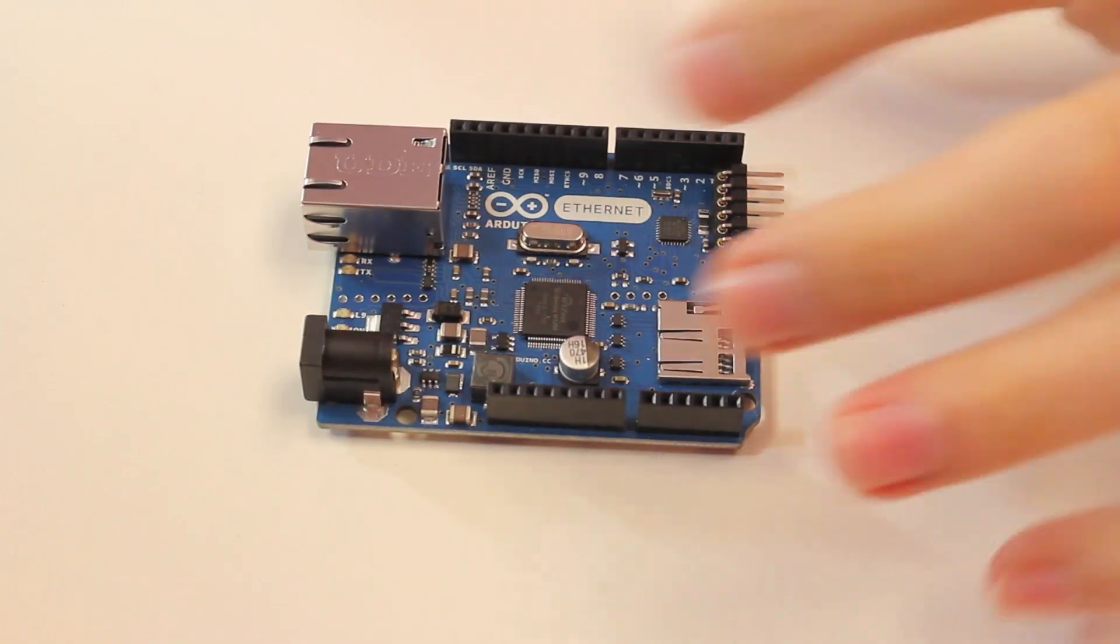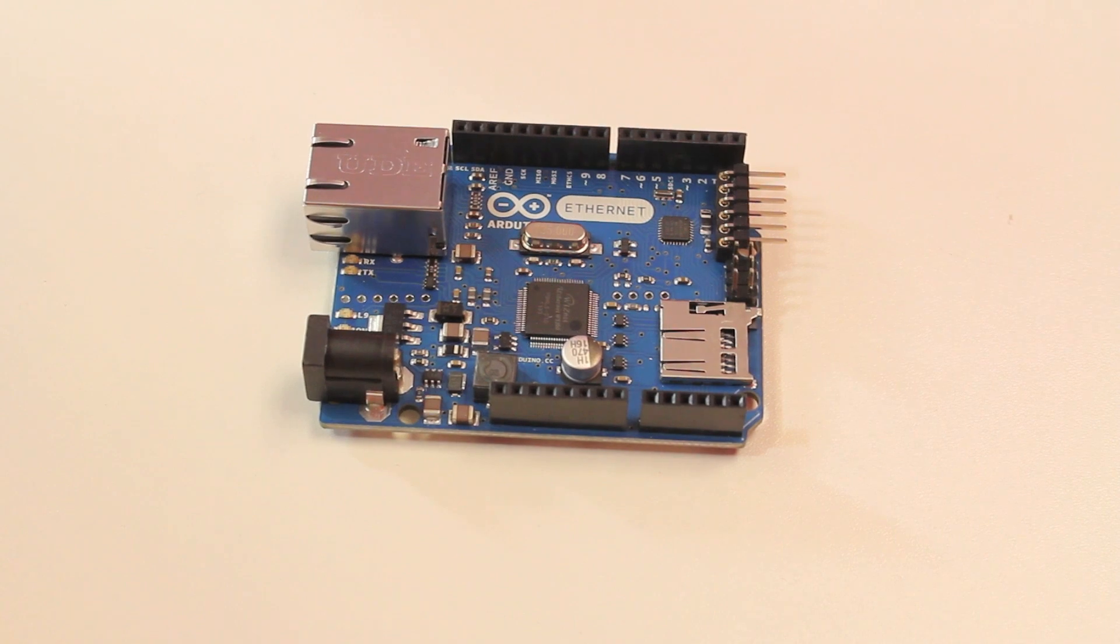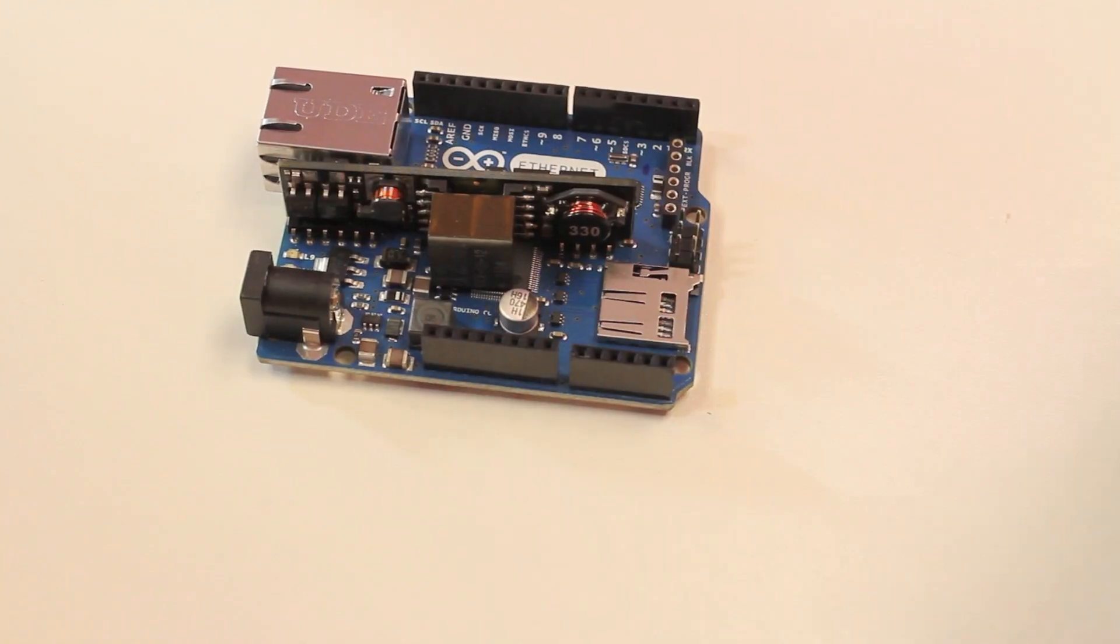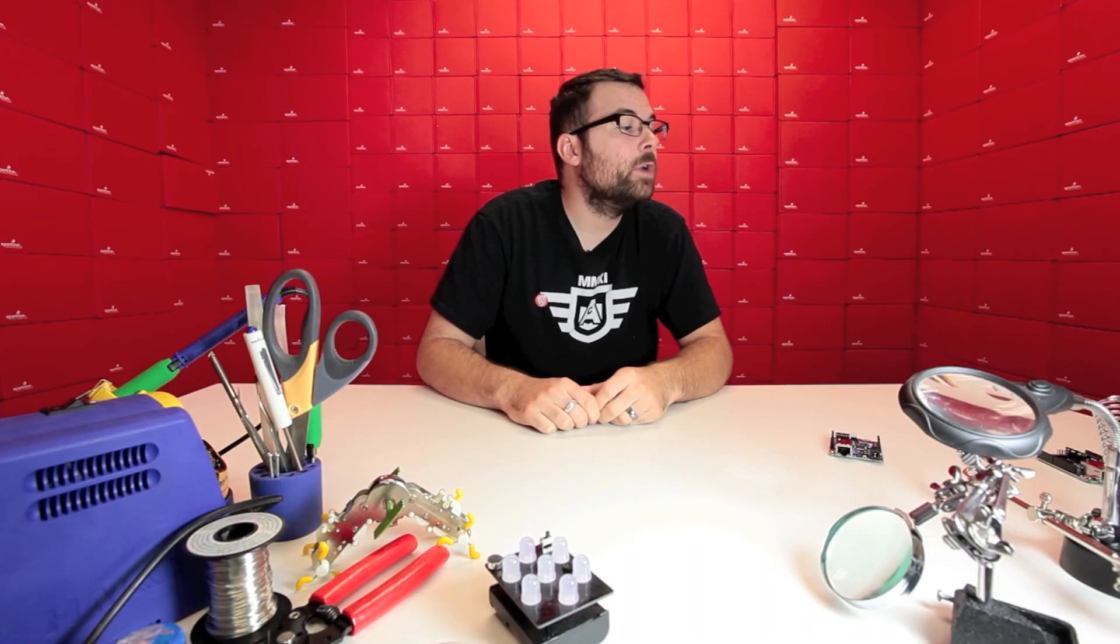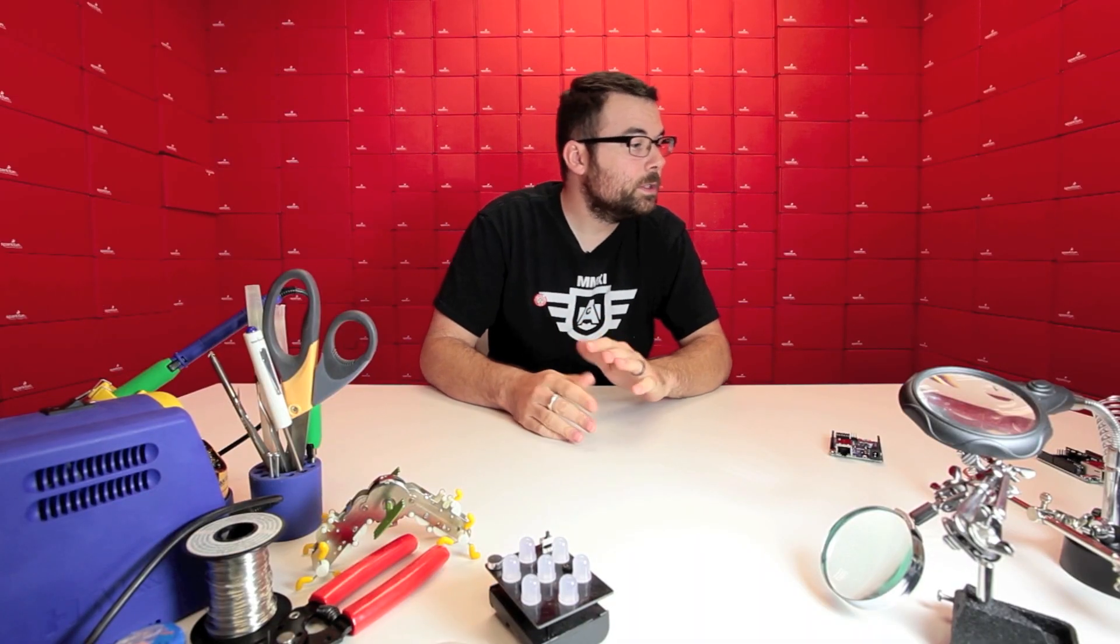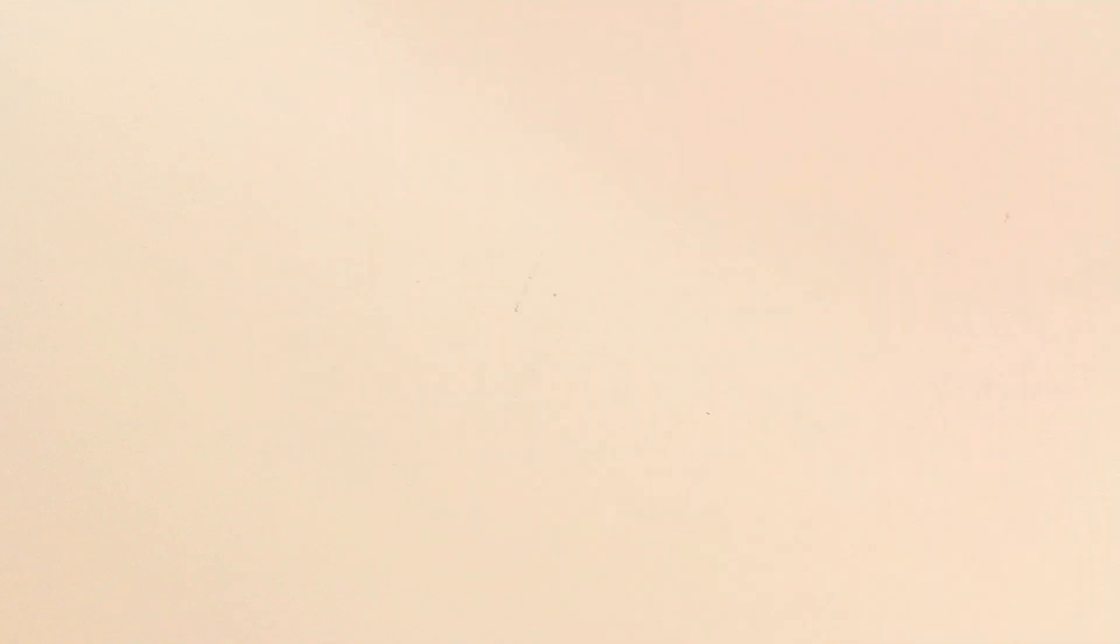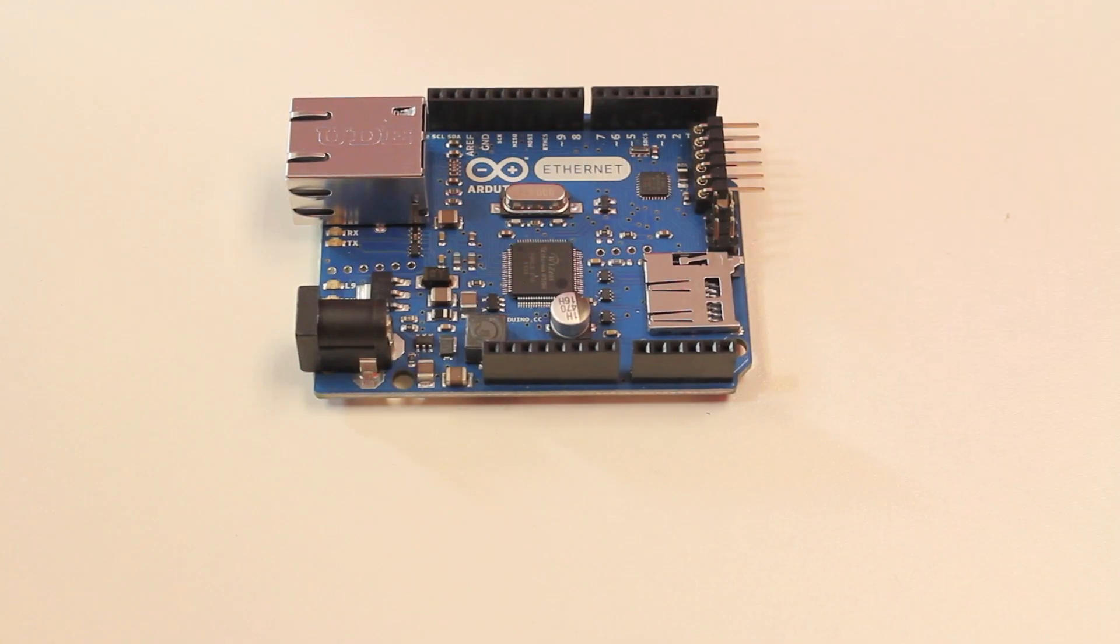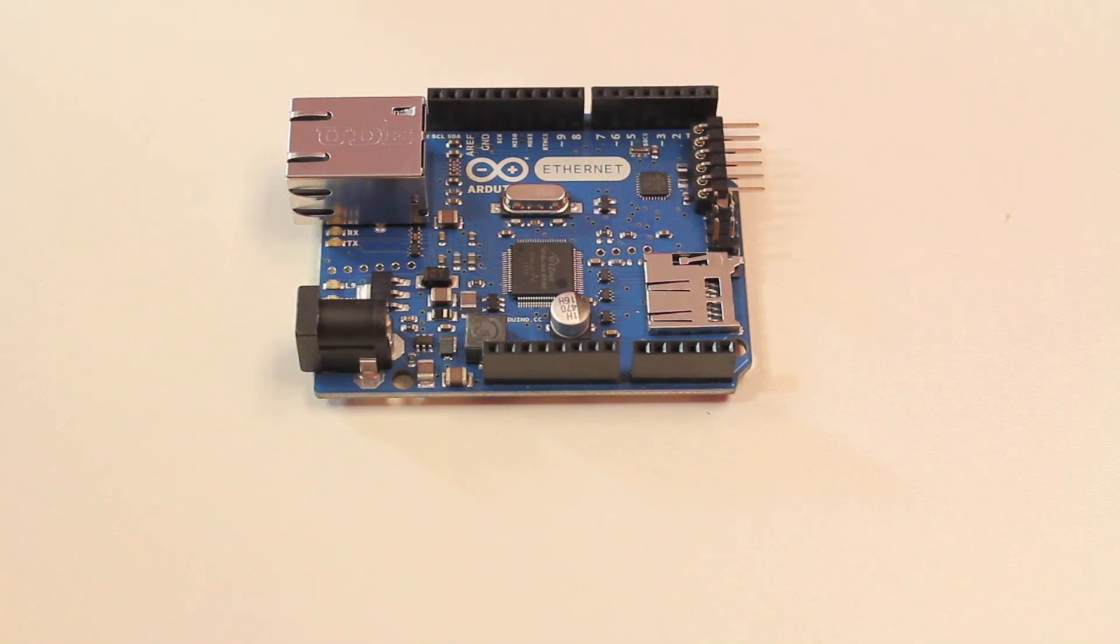This is the Arduino Ethernet without the Power over Ethernet module, and then this guy is the one with the Power over Ethernet module. We sell both varieties. And the only difference between the two is one of them has the module installed. As you can see from this one, there are holes here so that if you do want to add the module in the future, you can.